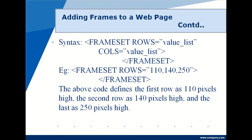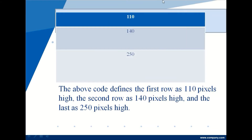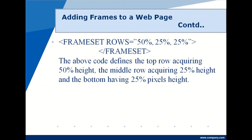When values are given in pixels, for example three values, the browser's window will be divided horizontally into three parts: the first row gets 110 pixels, the second row 140 pixels, and the third row 250 pixels in height. This is how the browser's window can be divided into three different horizontal parts based on the values specified in the value list.